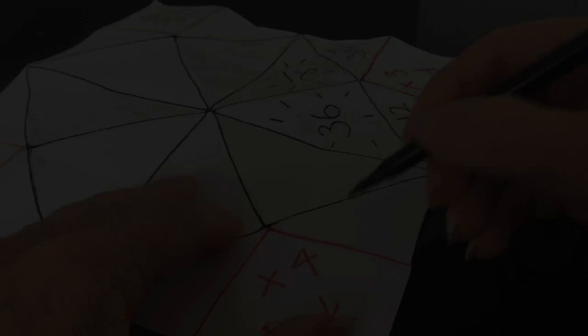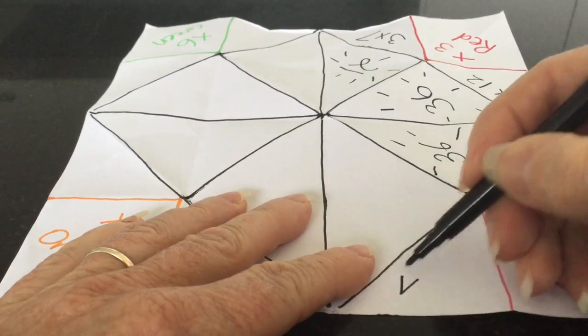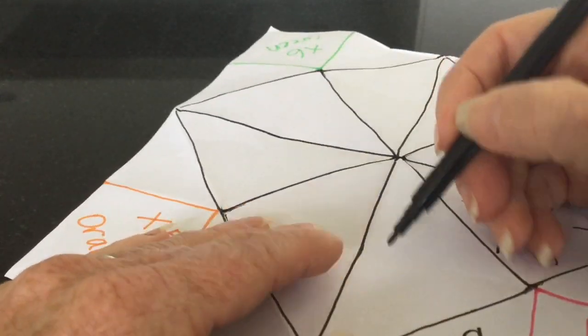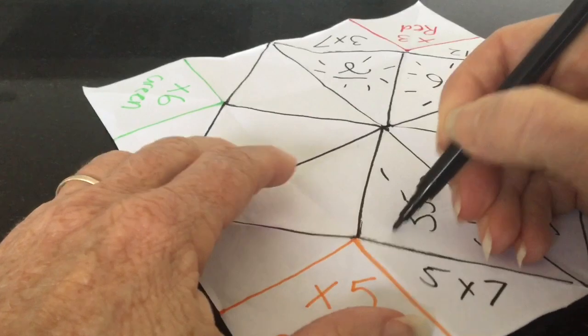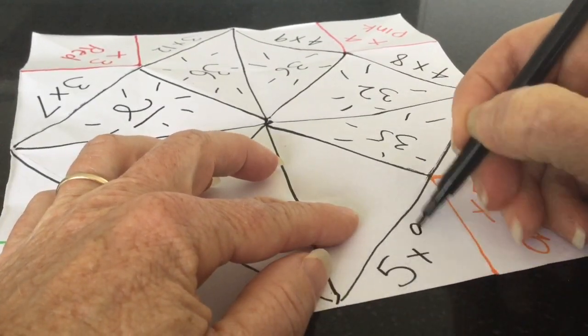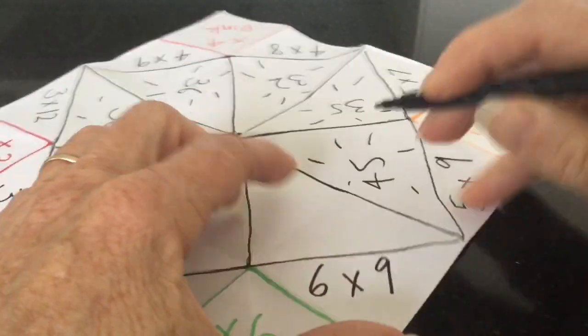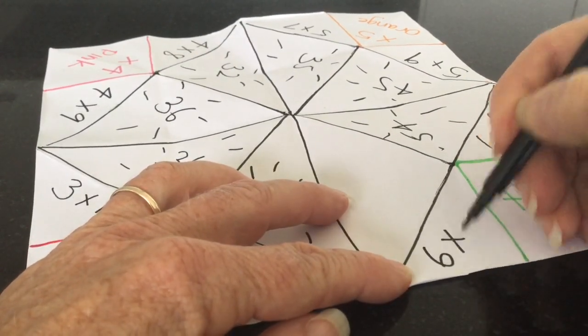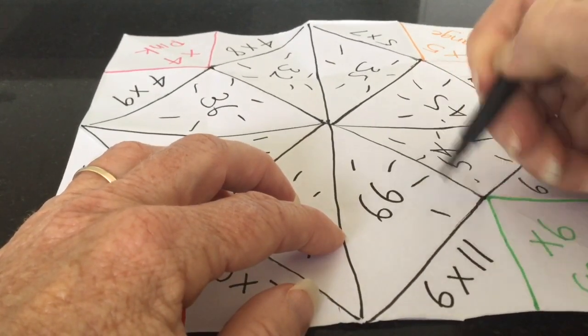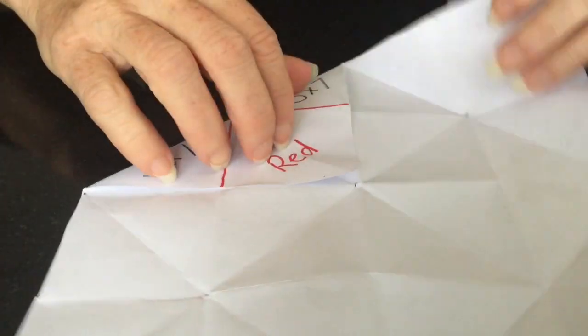Now let's fill in the rest of the multiplication that we would like to test ourselves on, or our whanau, or other people in our bubble. And we'll just fold that up and then you'll be ready to go.